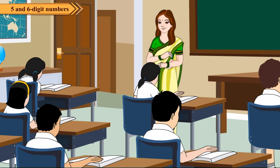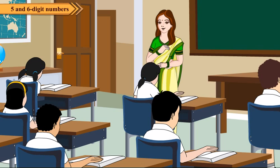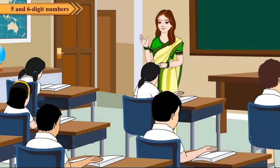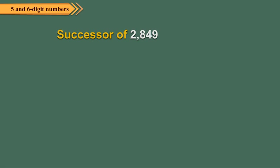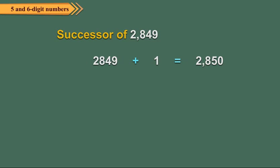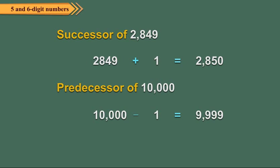Do you know what we get when we add or subtract 1 from a number? Yes — 1 more than a number is called its successor, and 1 less than a number is called its predecessor. For example, the successor of 2849 is 2850, and the predecessor of 10,000 is 9999.